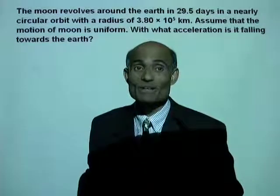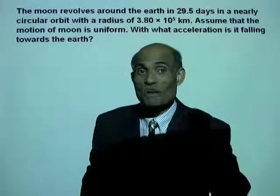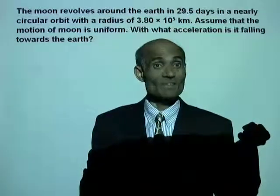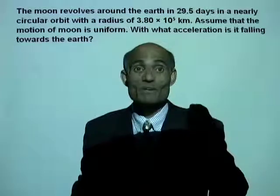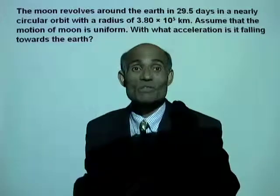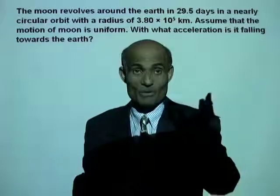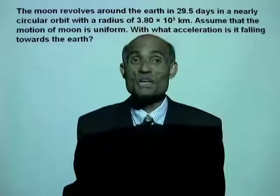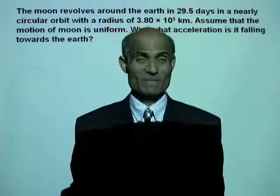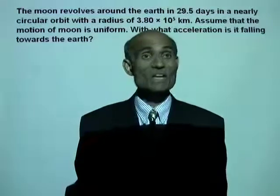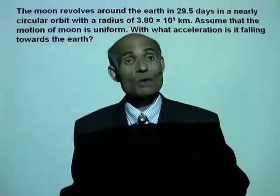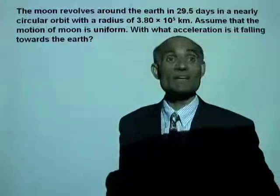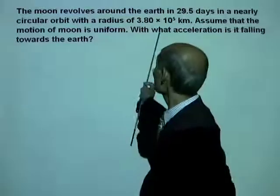If we know the period, we can use that to find the angular velocity. The equation for centripetal acceleration in terms of angular velocity is a equals r omega squared. So we will first obtain the angular velocity using the period.